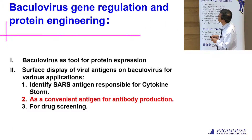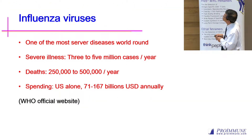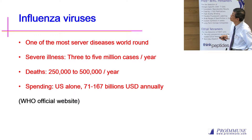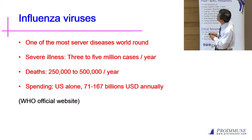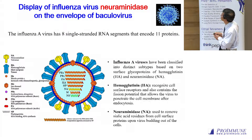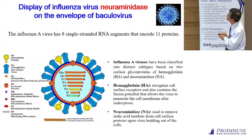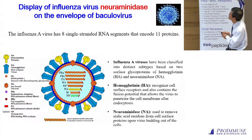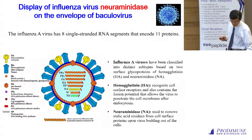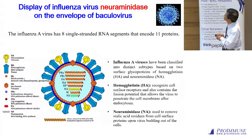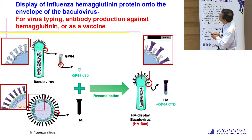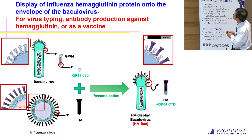This approach can also serve as a convenient antigen for antibody production. We used a similar strategy to study influenza virus. Influenza virus has two surface membrane proteins: hemagglutinin and neuraminidase. Hemagglutinin is a trimeric protein and neuraminidase is a tetrameric protein — hemagglutinin anchors C-terminally to the envelope, and neuraminidase anchors N-terminally. We tried a similar strategy by anchoring the CTD from GP64 to the C-terminal of hemagglutinin, and found it could successfully anchor the trimeric protein on the envelope of the virus.